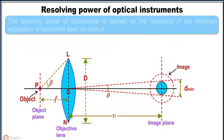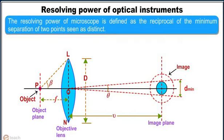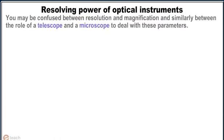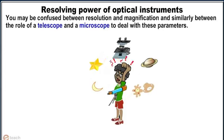The resolving power of microscope is defined as the reciprocal of the minimum separation of two points seen as distinct. You may be confused between resolution and magnification and similarly between the role of a telescope and a microscope to deal with these parameters.